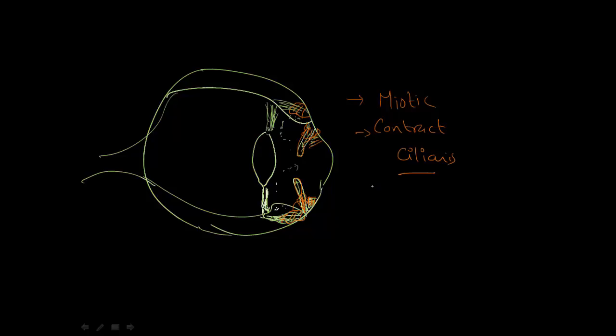So by both these ways pilocarpine serves as an agent to decrease the intraocular pressure so that it can be used in open and closed angle glaucoma, but not a first line drug in glaucoma.